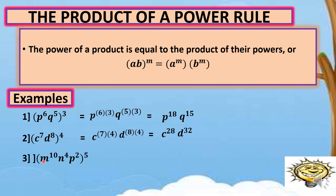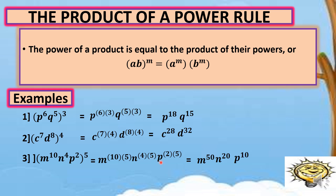For number 3, we have more variables: quantity m raised to 10, n raised to 4, and p raised to 2, raised to 5. So, 5 here will be used to multiply the exponents of variables m, n, and p. We have m raised to 10 times 5, n raised to 4 times 5, and p raised to 2 times 5. Multiplying: m raised to 50, n raised to 20, and p raised to 10. That is how the product of a power rule is applied.